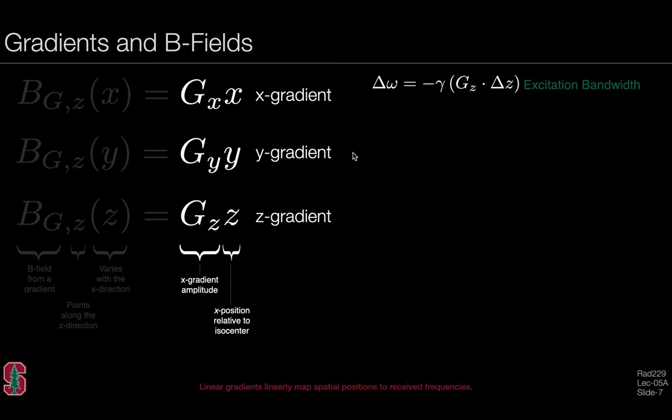Remember that in slice selection, we apply a gradient, say the z gradient, and that will produce a distribution of magnetic field over space. That distribution, when multiplied with the spatial positions of interest, the product with the gyromagnetic ratio gives us a range of frequencies. In slice-selective excitation, we refer to delta-omega as the excitation bandwidth.